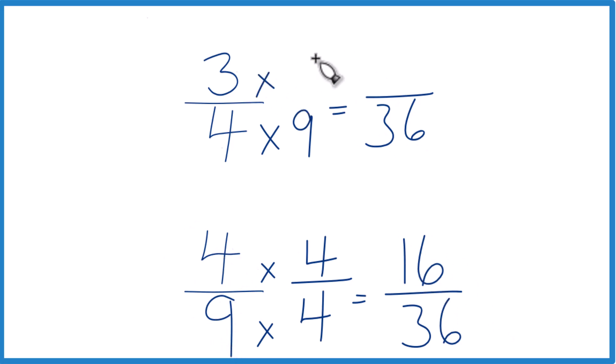Up here, let's multiply times 9, and we'll get 27. So now, same denominator, we just compare the numerators.